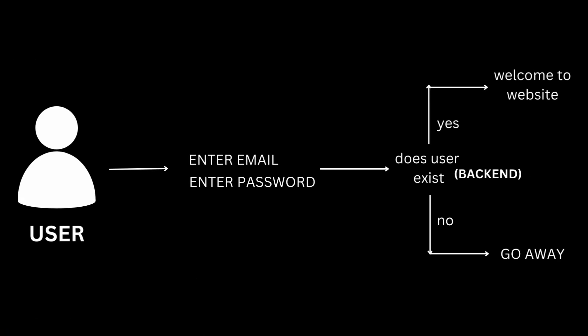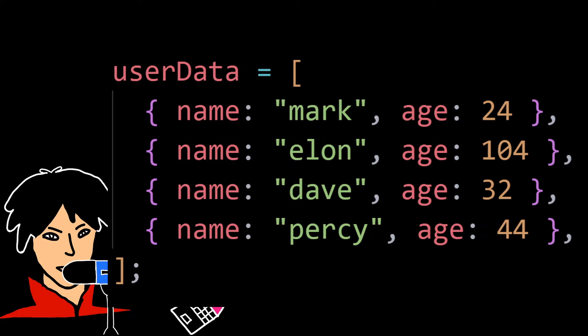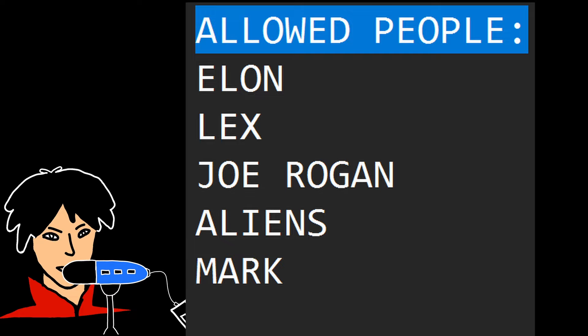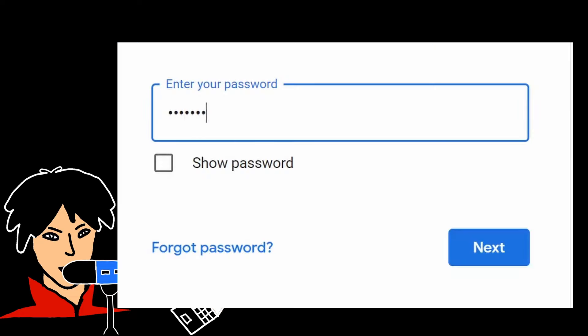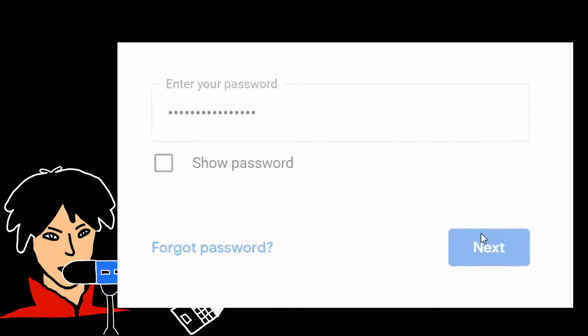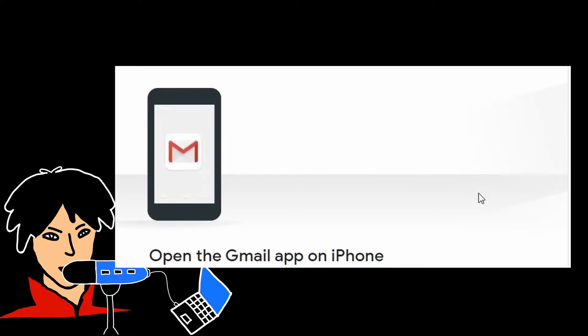When you want to access a website or app, the backend server asks you to provide some information, like a username and password. It's like showing your membership card to the bouncer. The backend server then checks this information against a list of authorized users it has, just like the bouncer checking your name against the club's membership list. If the username and password you provide match what the backend server has stored, it means you're a trusted user and the server lets you in.